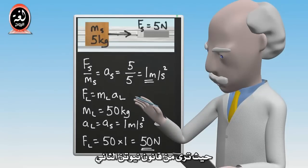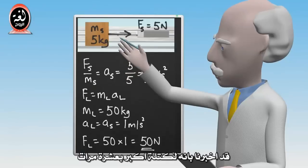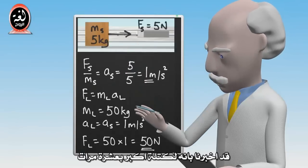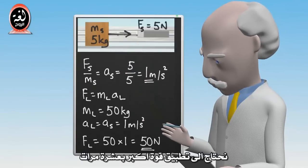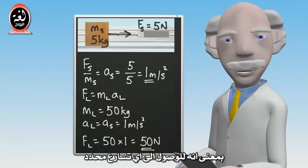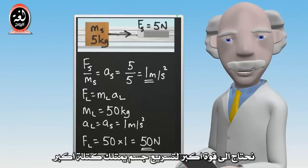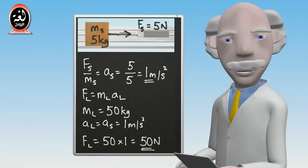This is interesting. Newton's second law has told us that for a block with a mass ten times larger, we need to apply a force ten times larger to get the same acceleration. In other words, to achieve a given level of acceleration, more force is required to accelerate an object which has more mass.